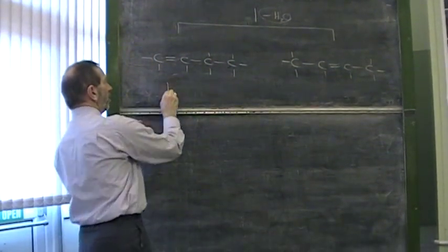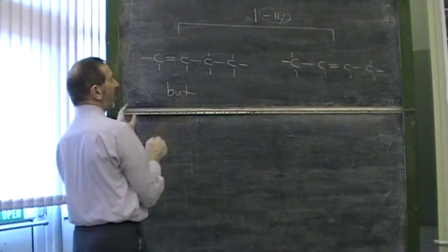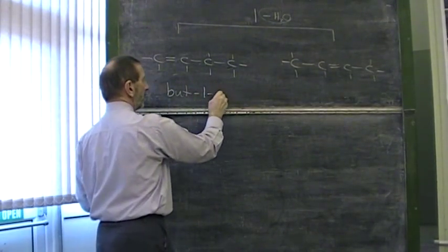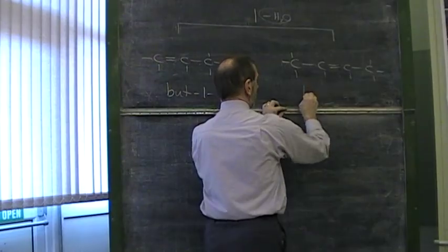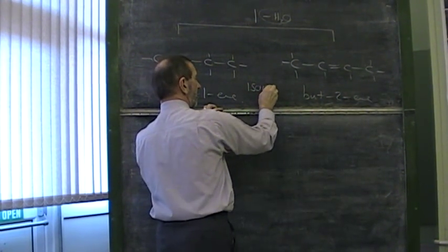This one, with its four carbons, is based on butane, double bond, but-ene. Where's the double bond? On carbon number one. But-1-ene. This one, but-2-ene. As I say, they're isomers.